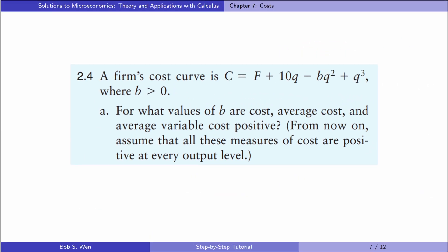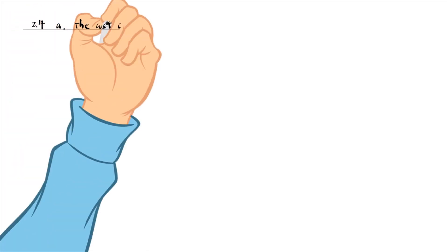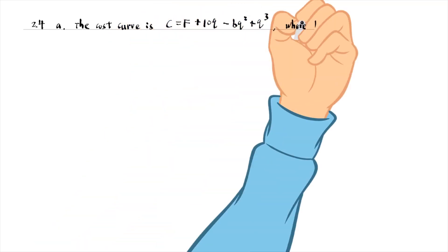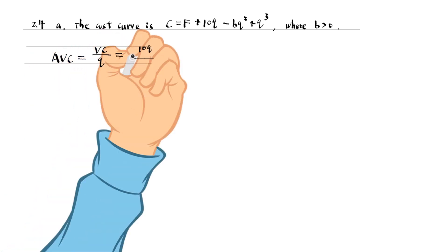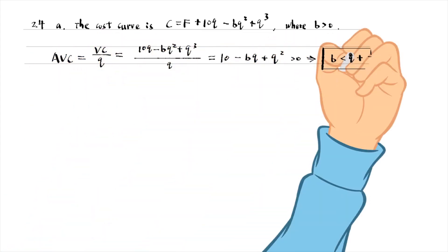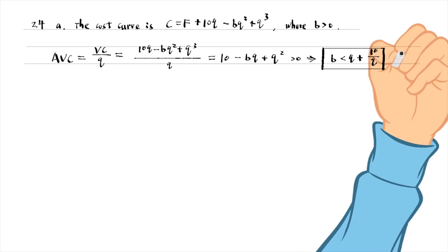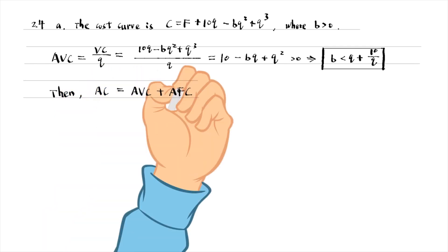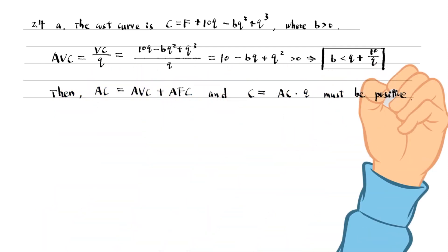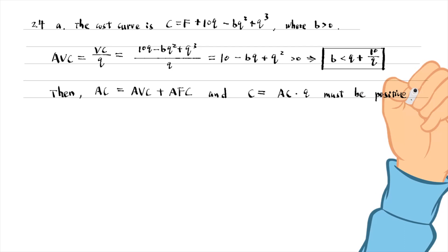Let's do exercise 2.4. A firm's cost curve is as follows, where B is positive. For what values of B are cost, average cost, and average variable cost positive? We can find the condition under which the average variable cost is positive. Then the average cost will be positive because it is the sum of the average variable cost and the average fixed cost. The average fixed cost is always positive, and the total cost must be positive once the average cost is positive.